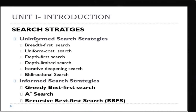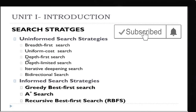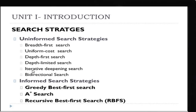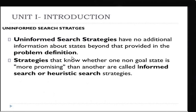There are two types of search strategies: uninformed search strategies and informed search strategies. Under uninformed search strategies, there are six strategies available: breadth-first search, uniform cost search, depth-first search, depth-limited search, iterative deepening search, and bi-directional search. We are going to see these strategies one by one.